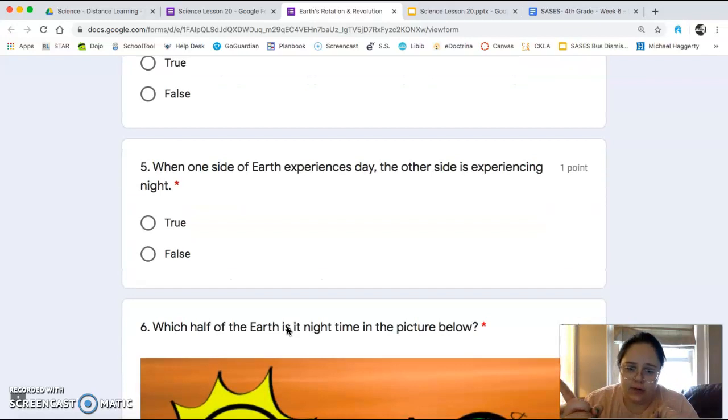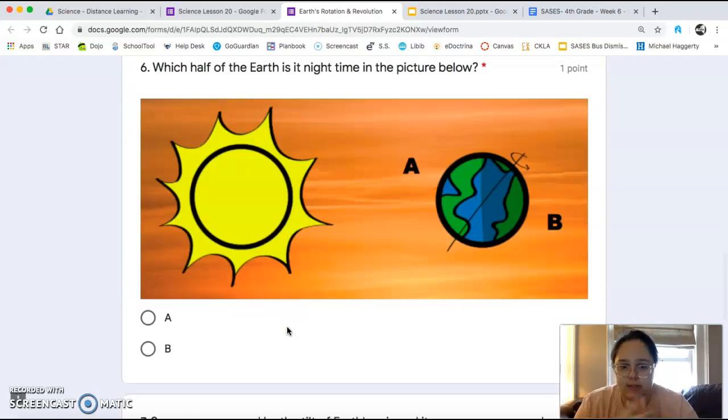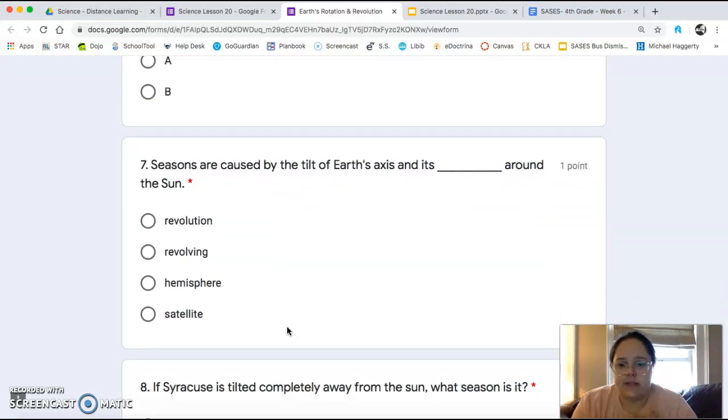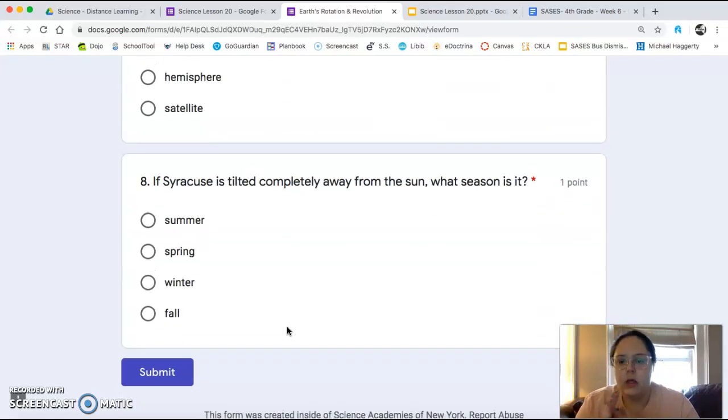When one side of Earth experiences day, the other side is experiencing night. True or false? We just did this one together. Which half of the Earth is at nighttime? A or B? Seasons are caused by the tilt of the Earth's axis and its blank around the sun. Fill in the blank. And lastly, if Syracuse is tilted completely away from the sun, what season is it?